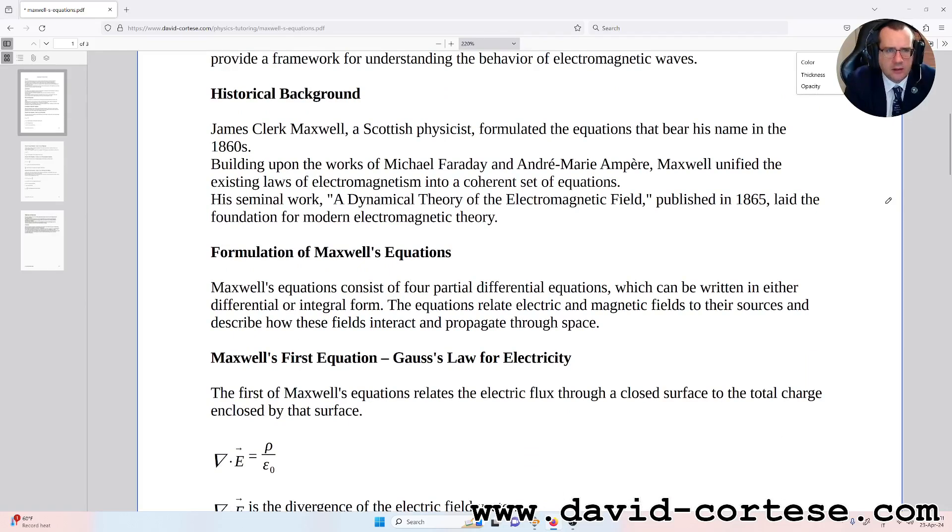Historical background. James Clerk Maxwell, a Scottish physicist, formulated the equations that bear his name in the 1860s. Building upon the works of Michael Faraday and André-Marie Ampere, Maxwell unified the existing laws of electromagnetism into a coherent set of equations.